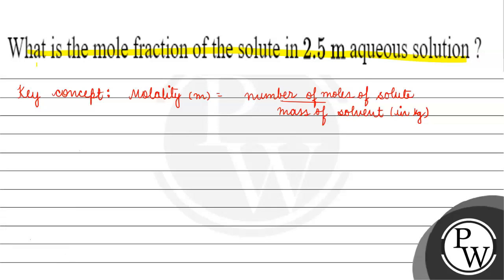We have to assume that the mass of solvent is 1 kg. The number of moles of solute will be equal to 2.5 in this case, because we are given that molality is 2.5 molal, meaning 2.5 moles of solute per 1 kg of solvent.